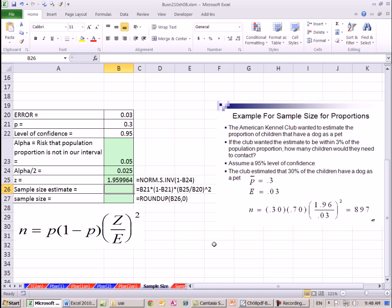So our sample size estimate. We have our P times 1 minus our P. And then I'm going to have to multiply that. In parentheses, we have our error. I'm sorry, the z divided by our error. z, error. Close parentheses, and we'll square that. So we'll round up.